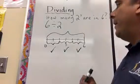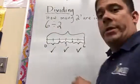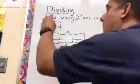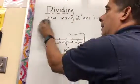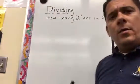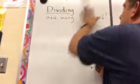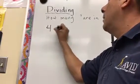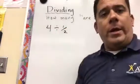Now this is the integer version, which is a simple one. But let's now look at fractions. So let's say we're dividing 4 divided by 1 half.